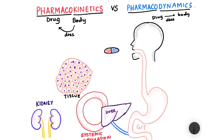For example, we have a pill here. Let us see what happens when we ingest this pill. Whenever we ingest a pill, that is known as administration. Administration can occur via different routes — you can take a pill, get an injection, get an IV, and so on. For today's discussion, we will take the oral route of administration.